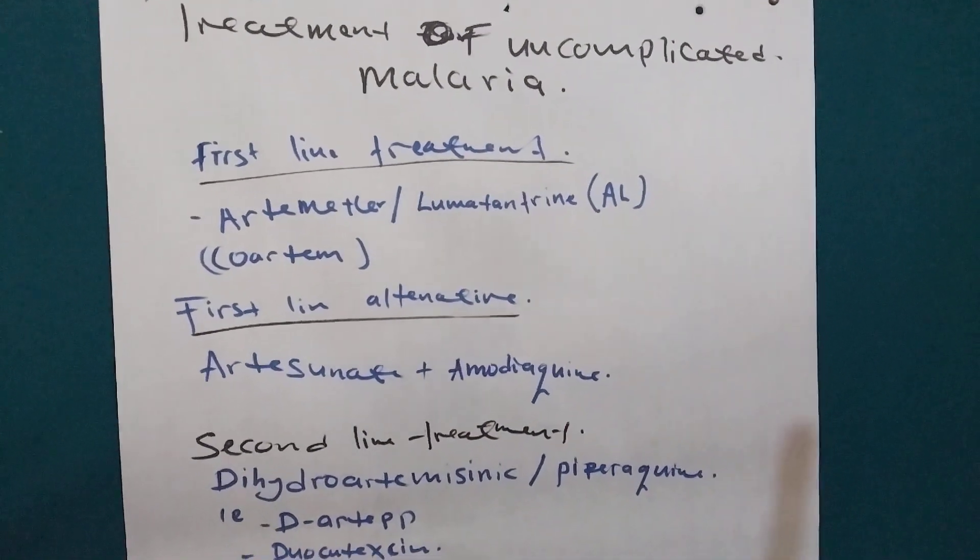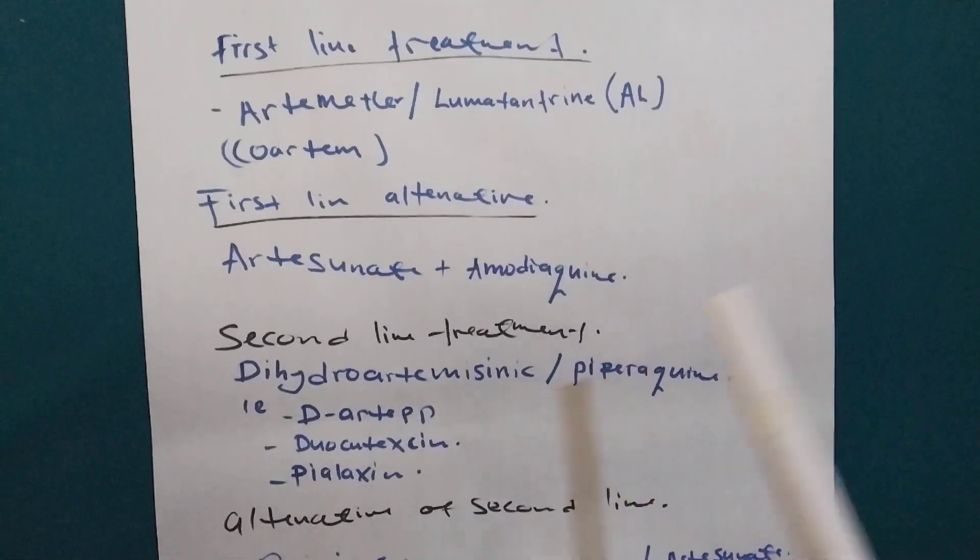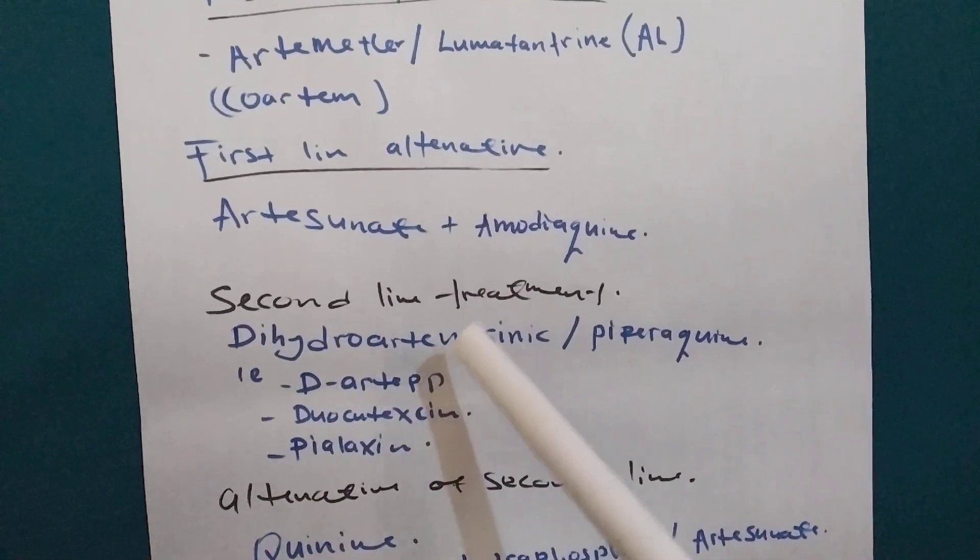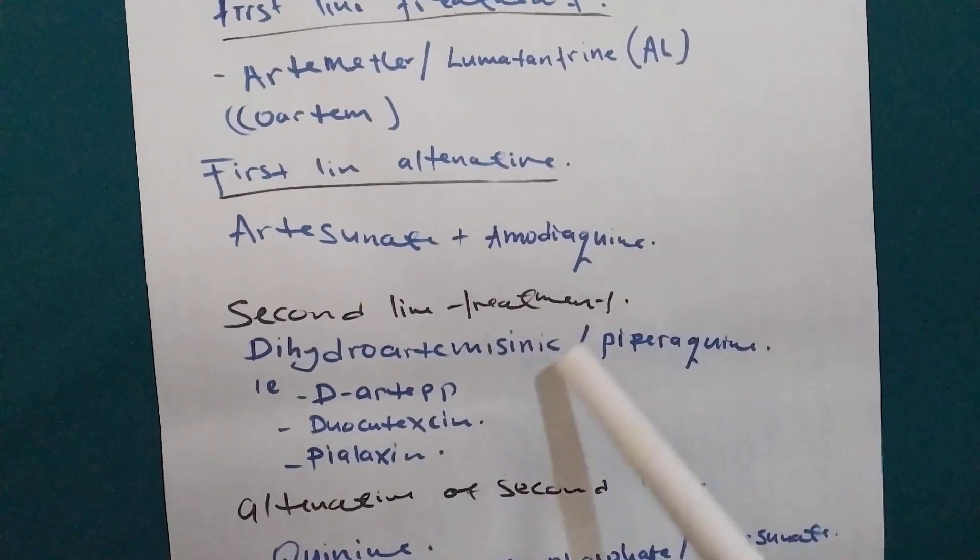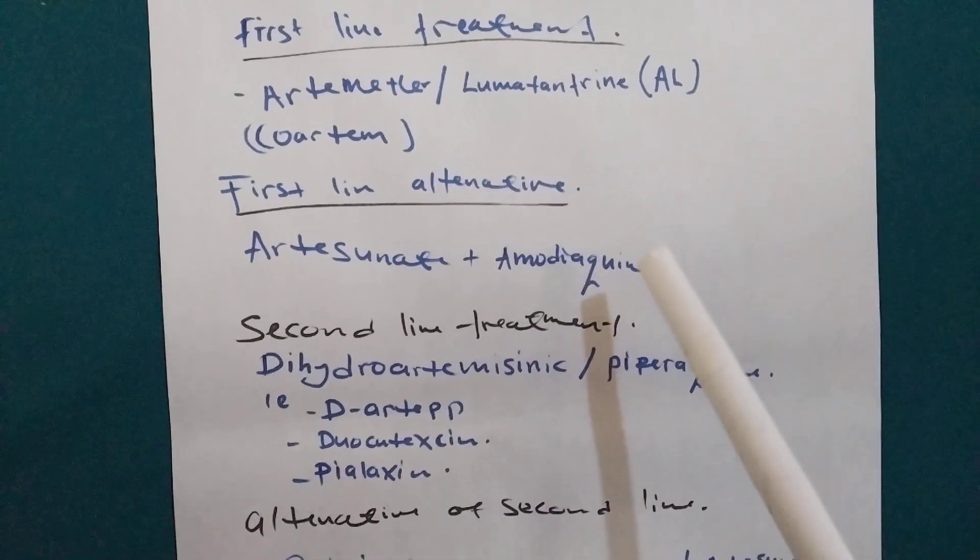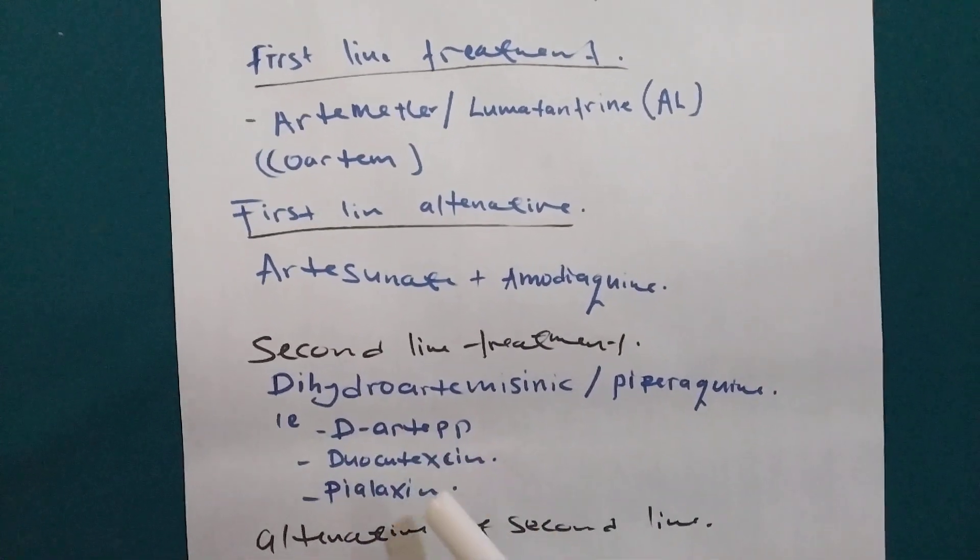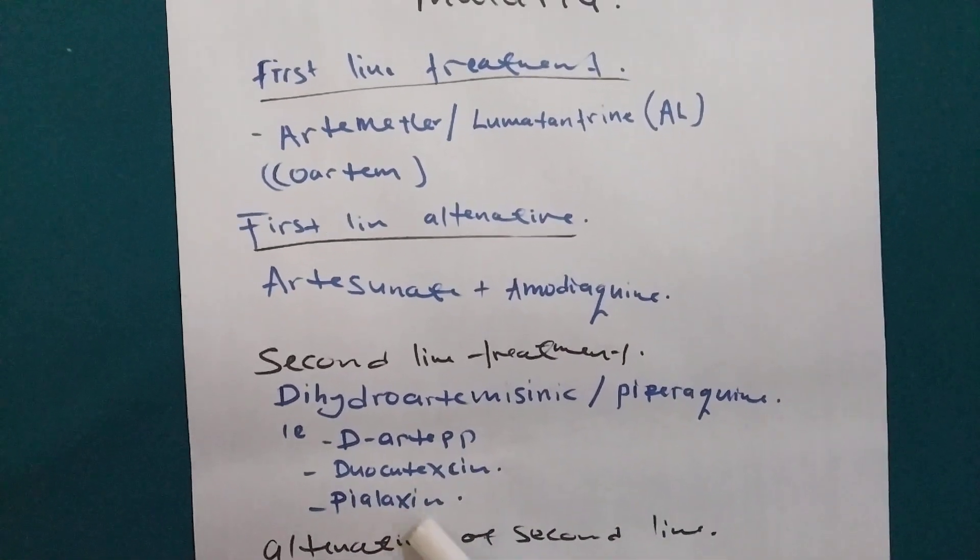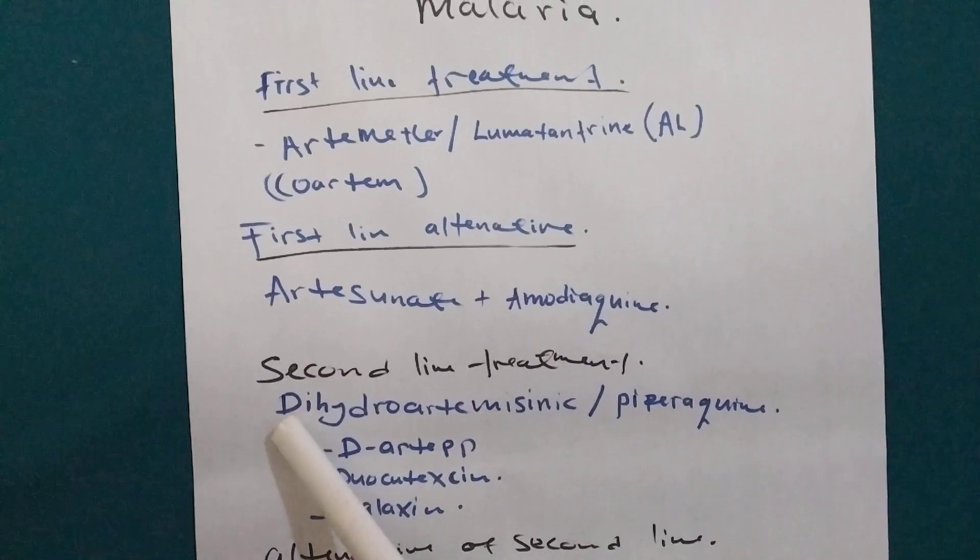And then the second line treatment of uncomplicated malaria, we have Dihydroartemisinin and then Piperaquine. And then in the brand name we can use D-Artepp, Duocotexin, Pialaxin. All is the second line with this name.